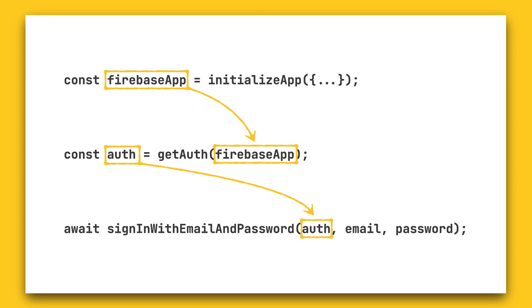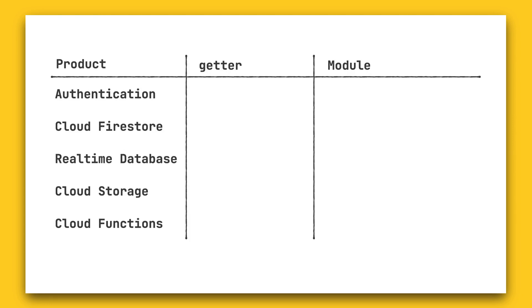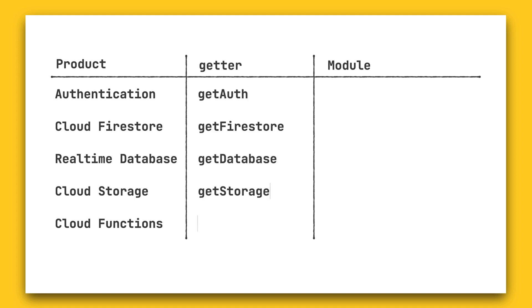You can think of it a bit like a chain — you pass the result of one call into the next call. Before you can use Firebase Auth, you need to import and initialize it. To use any of Firebase's services, you call a function named 'get' and then the name of the Firebase service you want to use — so getAuth for Firebase Auth, getFirestore for Firestore, and so on.